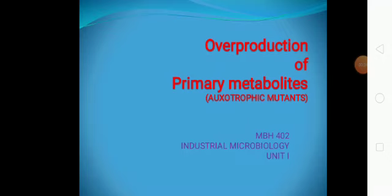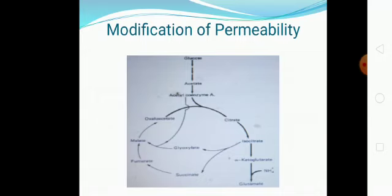In continuation to our previous class on overproduction of primary metabolites, we will be studying further types with lots of examples. Just a recap of what we studied in the last PPT: modification of permeability. This was a classical example to show how, just by understanding the microbial blueprint and their metabolic pathways, even without doing mutation you can overproduce the product. By not giving biotin in the medium you make the cell wall very thin so that the organism will excrete glutamic acid, and without glutamic acid inside the cell no feedback control system will happen.